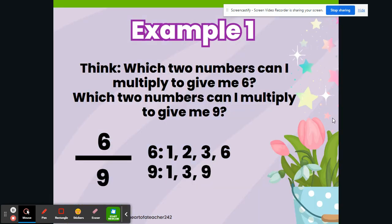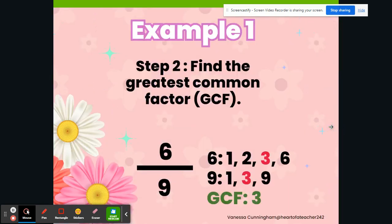You can think about it like this: which two numbers can I multiply to give me 6? Which two numbers can I multiply to give me 9? For example, 2 times 3 equals 6, so I know 2 and 3 are factors of 6. Our next step is to find the greatest common factor, also known as GCF. Our greatest common factor is 3. You will also notice that 1 is also a common factor, however it is not the greatest.